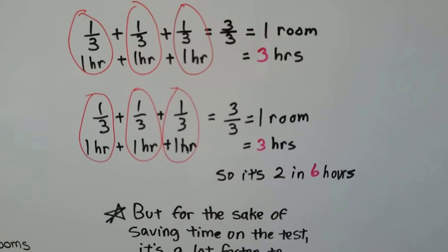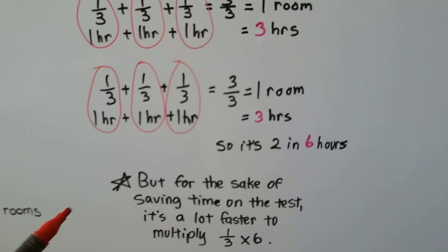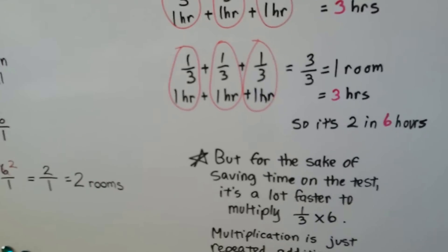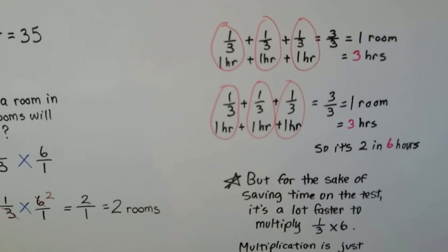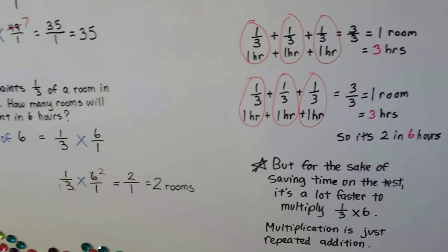But for the sake of solving time, of saving time on the test, it's a lot faster to multiply 1/3 times six. You'll get your answer much quicker and have more time. Multiplication is just repeated addition. It's the same thing. So if you look at this as multiplication and not addition, you're going to go quicker.